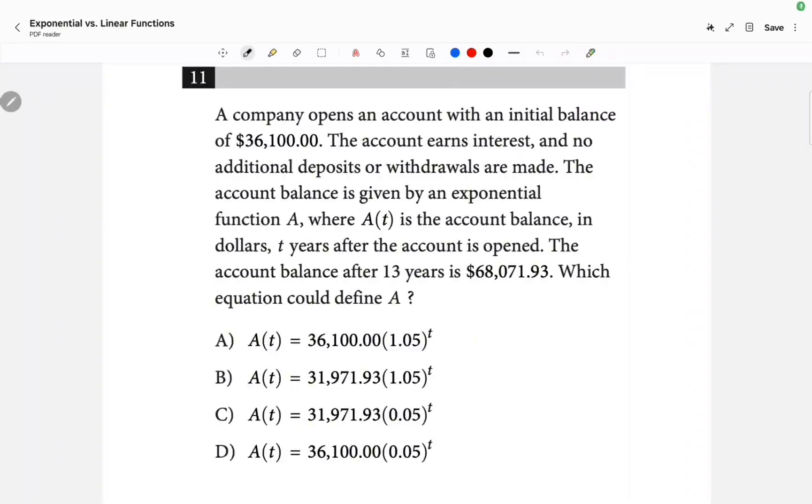The company opens an account with an initial balance of $36,100. So initial means the A of the exponential equation is going to be 36,100. So it cannot be choice B, it cannot be choice C. Now, it says here that after 13 years, the account became 68,000.